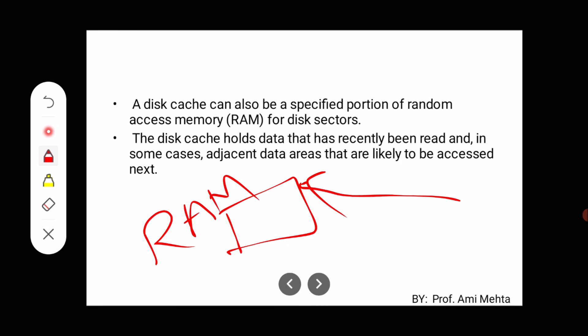The most recently used data is stored in this portion which is part of RAM, and we call it disk cache. The most recent data is stored in this, and adjacent data areas that are likely to be accessed next can also be stored in this disk cache. This is the concept of disk cache and why it is used. Thank you.